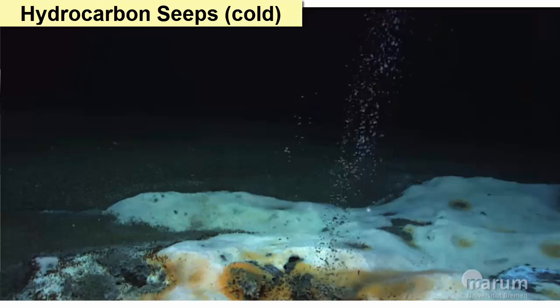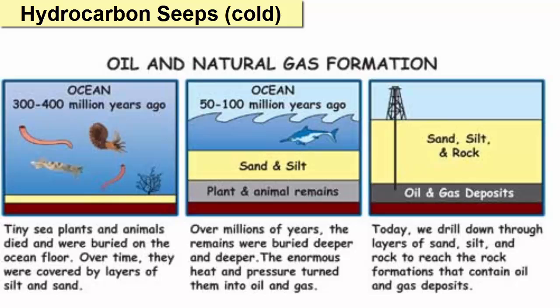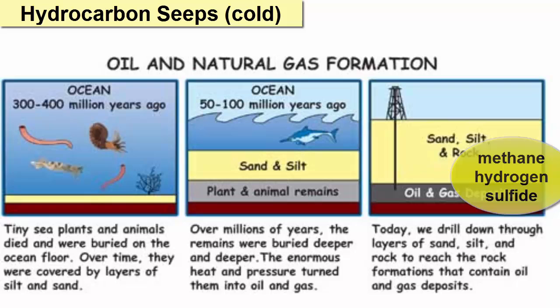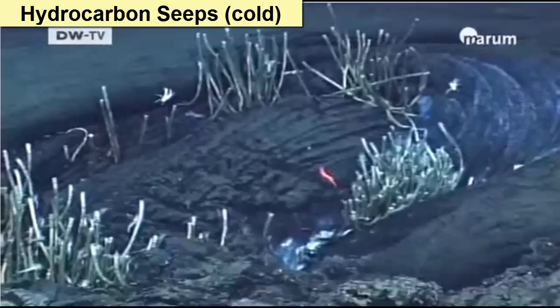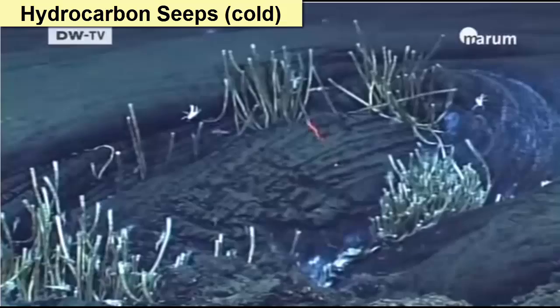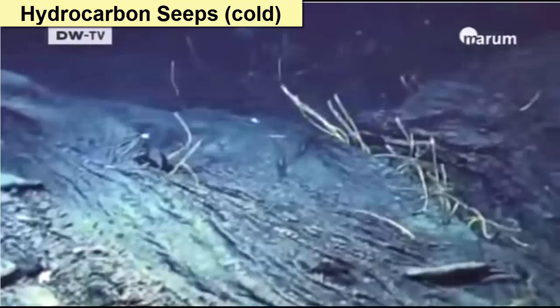Hydrocarbon seeps are typically nearby hypersaline seeps because hydrocarbons form when shallow seas and intertidal wetlands are buried and decomposed without oxygen. They produce primarily methane and hydrogen sulfide gases, but also oil and tar. These liquids and gases are less dense than their surroundings, so they rise up cracks and bubble out onto the seafloor. When this happens on land, we call them tar pits. On the seafloor, they create large asphalt strips surrounded by unusual seep communities, much like those found at hypersaline seeps.